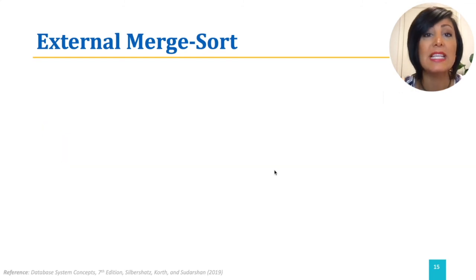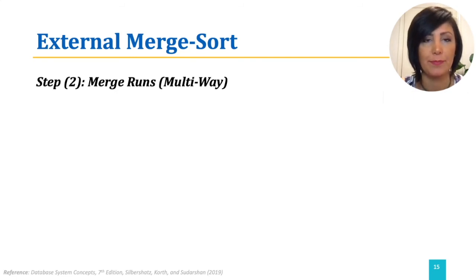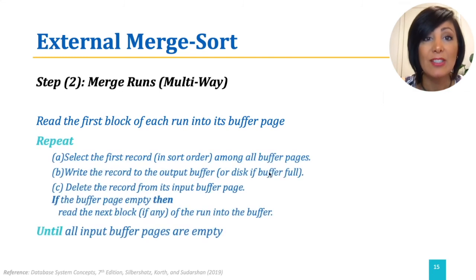In the second step, instead of a two-way merge of our simplified version, it merges the runs in a multi-way merge. If we have B blocks of memory available, it uses B-1 blocks of memory to buffer input runs, and one block to buffer output. It reads the first block of each run into the buffer page, and repeatedly selects the first record among all buffer pages, deletes it from the buffer page, and writes it out to the output buffer until all pages are empty.